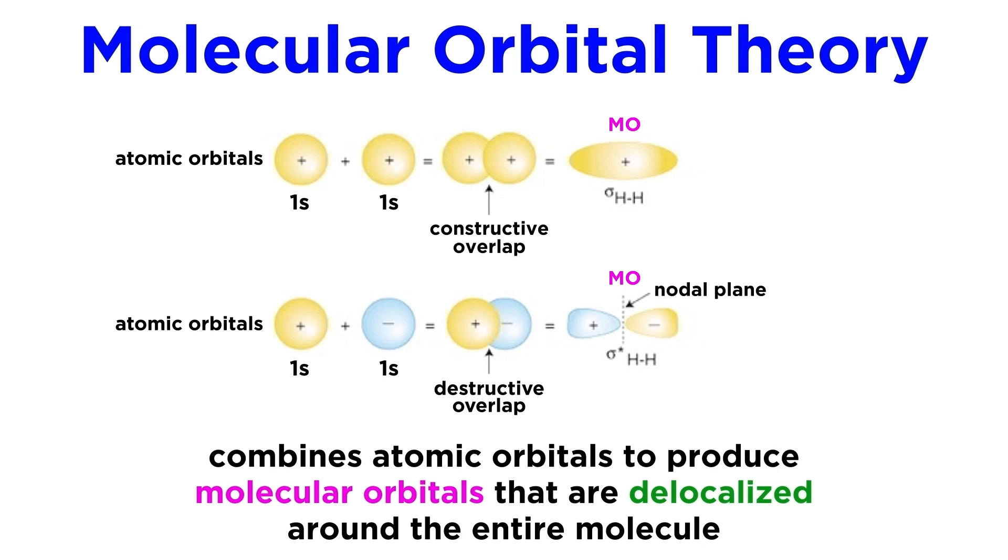Molecular orbital theory involves the mathematical combinations of atomic orbitals to form molecular orbitals which belong to the entire molecule, rather than a single atom, which is the case for the familiar hybrid atomic orbitals. But like any other type of orbital, these molecular orbitals describe regions in space where electrons can be found. So how precisely does this combination occur?